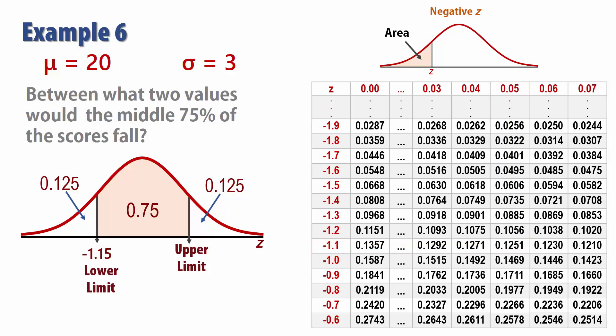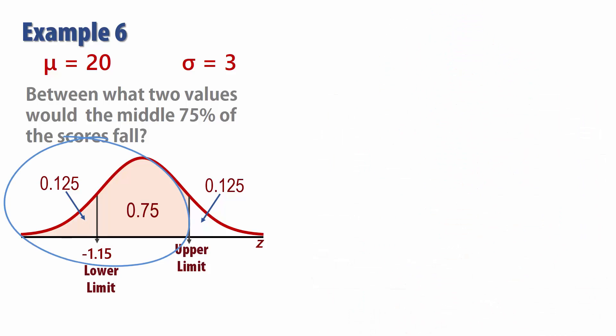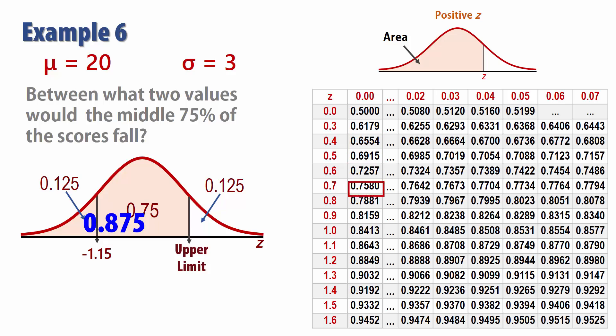For the upper limit, the area below is 0.75 plus 0.125, which gives 0.875. Looking that up in the table, the closest is 0.8749, corresponding to a Z score of 1.15. That should be expected because the normal curve is symmetric.